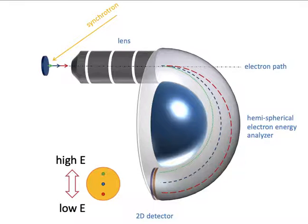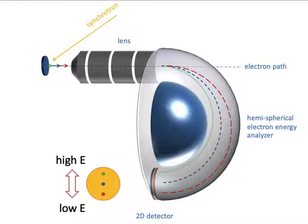This is the schematic diagram of the Electron Energy Analyzer. Electrons pass through the lens and enter the Hemispherical Electron Energy Analyzer, which analyzes both the energy and momentum of the electrons.